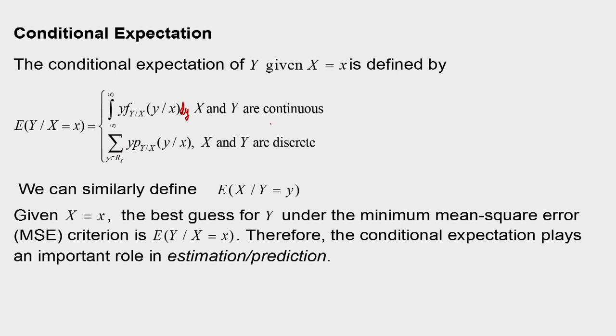Similarly, when X and Y are discrete, this is defined by the sum: y times p(y|x), the conditional PMF of Y given that X equals small x, where y belongs to the range of Y — because Y is a random variable it will have some range, so for all those y we have to consider this sum. That way we define the conditional expectation, and similarly we can define the conditional expectation of X given that Y equals small y.